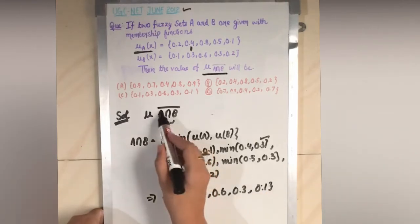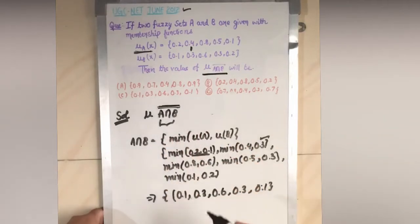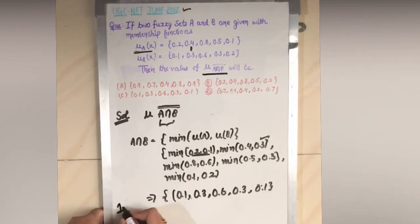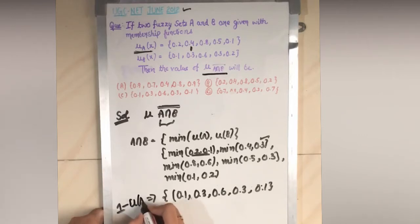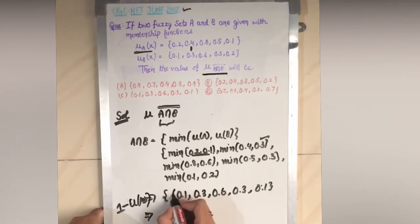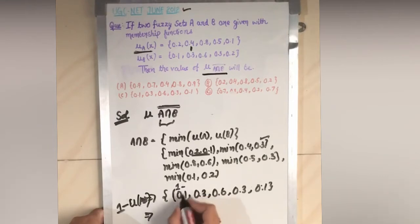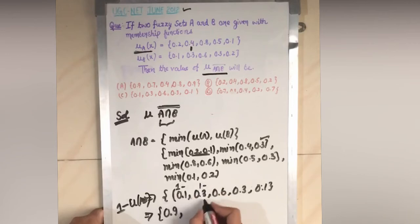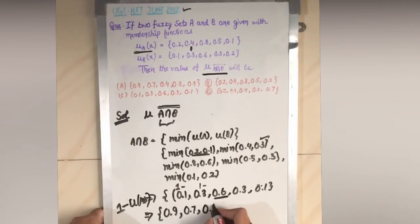Now we have to perform the complementation operation. In fuzzy logic, complementation is performed as 1 minus the membership of A intersection B. Subtracting: 1 minus 0.1 gives 0.9; 1 minus 0.3 gives 0.7.